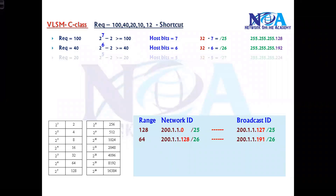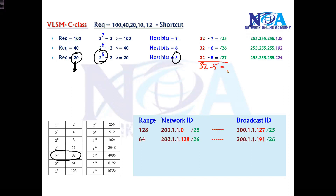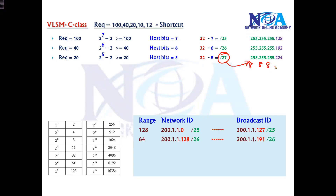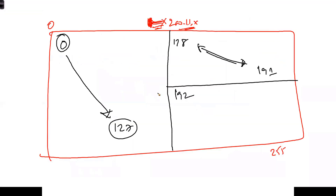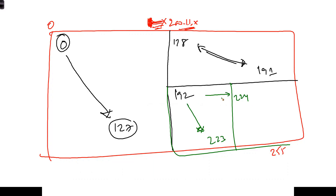The next requirement is 20 hosts. The nearest possible size is 2 to the power of 5, which is 32. Those 5 bits are host bits, so subtracting 5 from 32 gives 27 network bits. The subnet mask is /27 — written as 8.8.8.3 — equivalent to 255.255.255.224. The range is 32 addresses from 192 to 223.